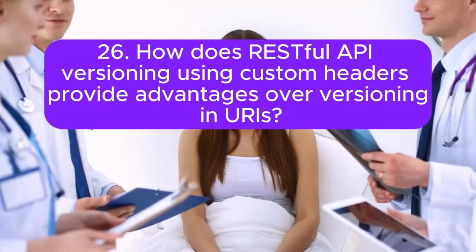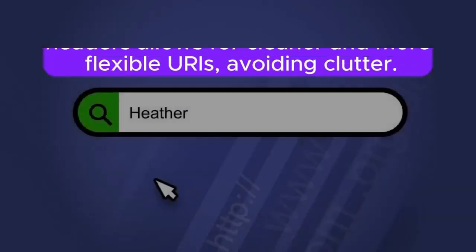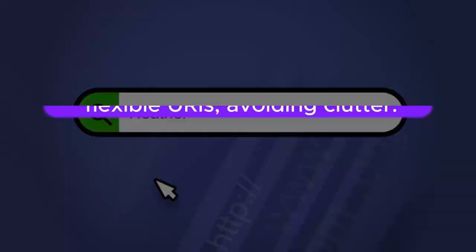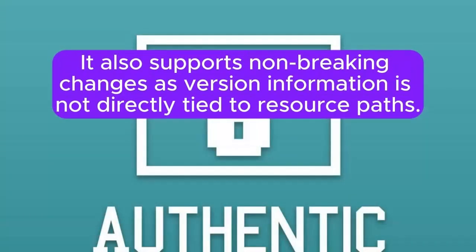Question 26: How does RESTful API versioning using custom headers provide advantages over versioning in URIs? Versioning in custom headers allows for cleaner and more flexible URIs, avoiding clutter. It also supports non-breaking changes, as version information is not directly tied to resource paths.